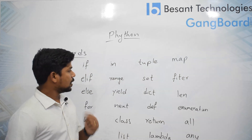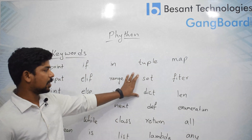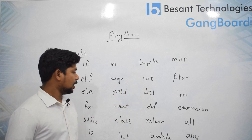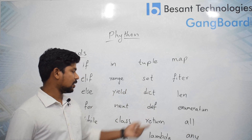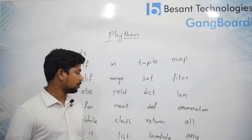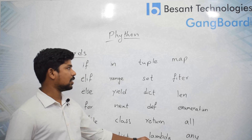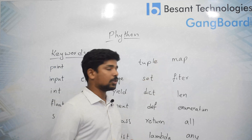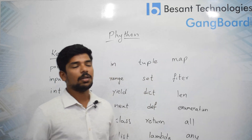'set' and 'dictionary' are advanced data types used for storing any kind of data. 'def' is used for creating a function. 'return' is used to return a value from a function. 'lambda' is an anonymous function. 'map' and 'filter' are also anonymous functions used for creating functions or filtering values from a list.